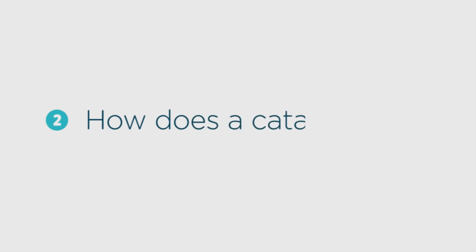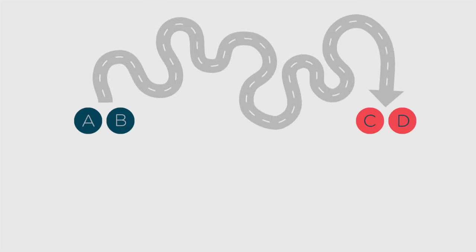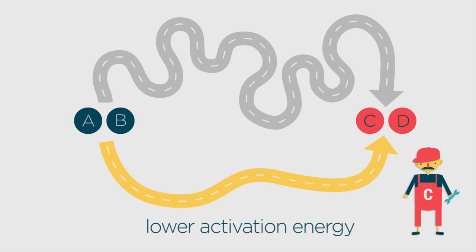So how does a catalyst work? A catalyst works by providing an alternative pathway for the reaction to occur. This alternative pathway has a lower activation energy than the pathway without the catalyst.